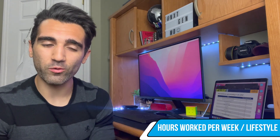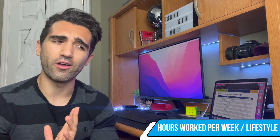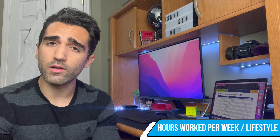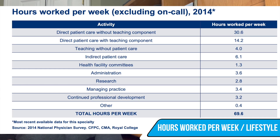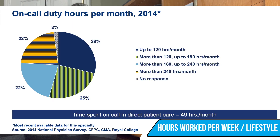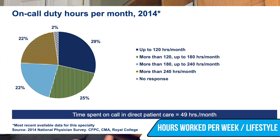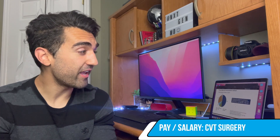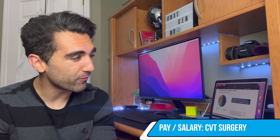We can talk about hours worked per week as a CVT surgeon — they alluded earlier to the hours being irregular and the specialty being demanding. When I ran the numbers, CVT surgeons work the longest hours of any doctors anywhere in Canada among all specialties. On average they work more than 82 hours per week, compared to the average working week of about 35 to 40 hours. They work about 70 hours per week in regular working hours, plus an additional 50 hours per month on call in direct patient contact — rounding up to definitely greater than 82 hours per week.